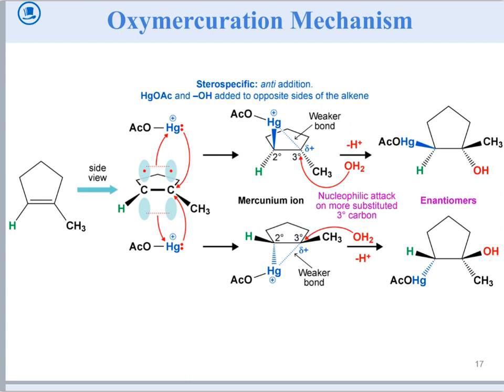Consider carbon 1 and carbon 2, where carbon 2 is more substituted. First, you have the mercury with the plus charge and a lone pair, coming from either the top or the bottom. You have a secondary and a tertiary carbon. The solvent always goes for the more substituted carbon. Even though there are no carbocations, what happens is the mercury and the solvent — the OH — end up on opposite sides, giving you the trans product.